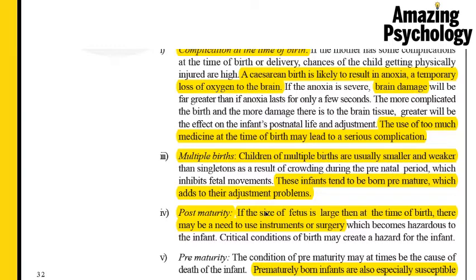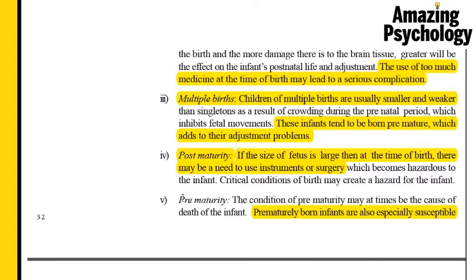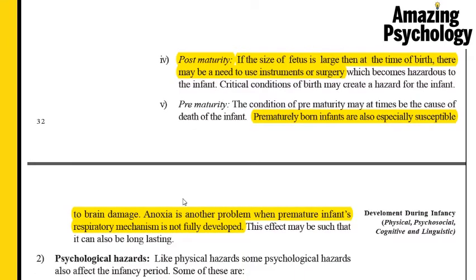If a child is born post-maturely, you might think that's a good thing, but it's not — because the fetus becomes bigger than a normal child born at around 280 days, so instruments or surgery may be needed to deliver the child, which can also result in hazards. The next physical hazard is prematurity, when the infant is born much before full term. In this case, the child's lungs are not fully developed, and anoxia can also occur due to premature birth if the respiratory system is not fully developed.